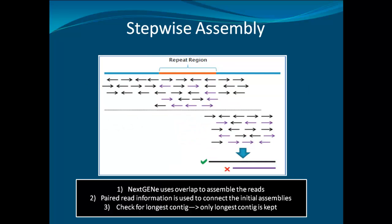NextGene Software contains a stepwise assembly method to map across the repeat region. First, NextGene begins assembling the reads by checking for overlaps. Then, when it reaches the end of a contig that has no overlap, it uses the paired-end read information to map across the contigs. Only the longest contig is formed and will be kept.